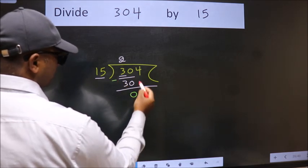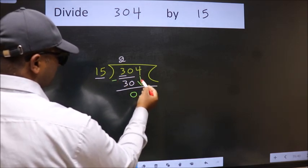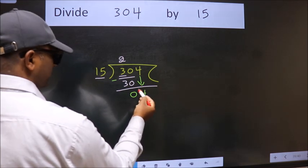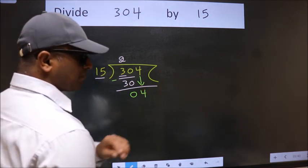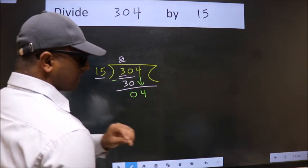After this, bring down the next number, so 4 down. After this step, the mistake happens, and the mistake is this.